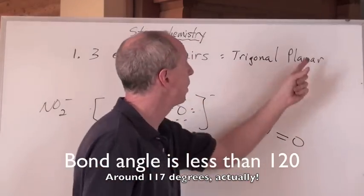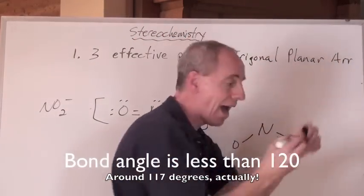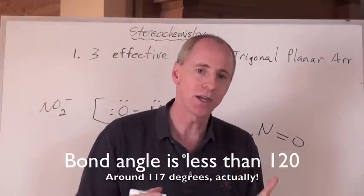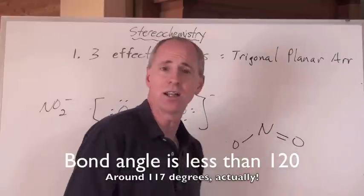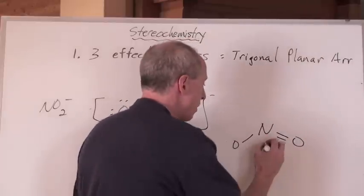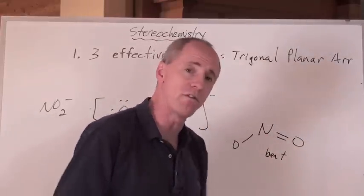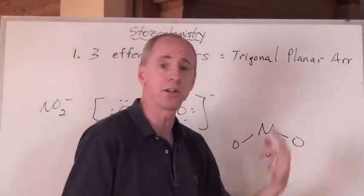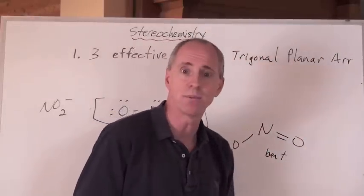So a trigonal planar arrangement is what we have, right? But that's not always the name of the shape. Sometimes you're going to get, well, what's that look like? Well, it's bent. So there's a bent shape in here, just like there was when there was a four effective pair one that had a bent shape. A three effective pair one, trigonal planar arrangement, can also have a bent shape. That's cool.